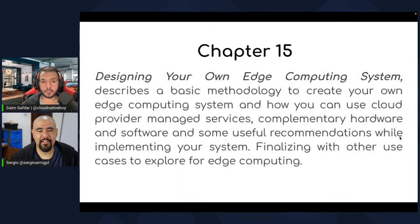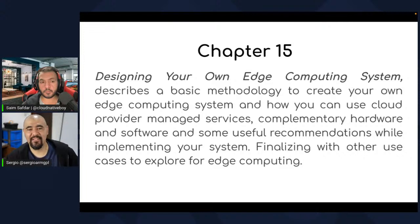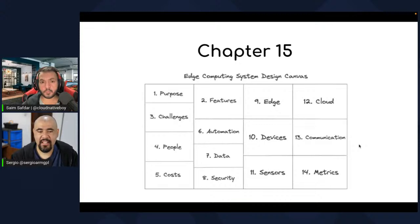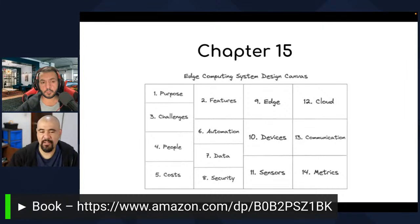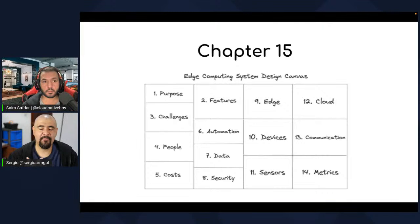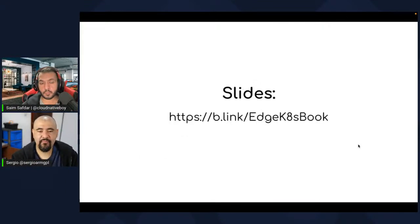The last chapter, chapter fifteen, is about organizing all the information using a kind of lean canvas methodology diagram to help you define your whole edge computing system. There is a PDF with sections you fill by answering questions about your system: the features, purpose, challenges, the team building the system, cost, automation, data, data security, which devices you will use, sensors, communication protocols, metrics, what runs on the cloud, and what runs at the edge. That is basically the whole content of the book.